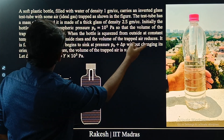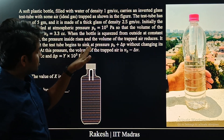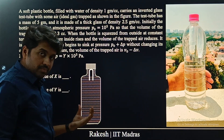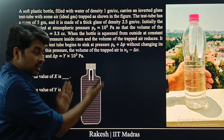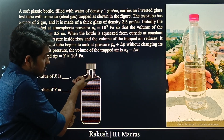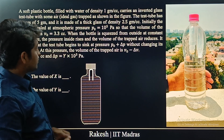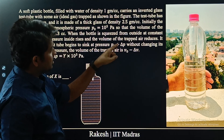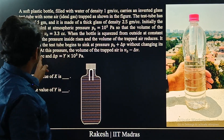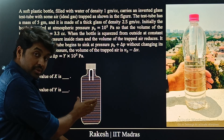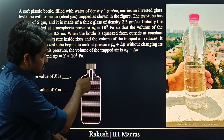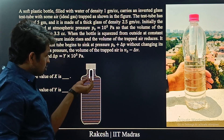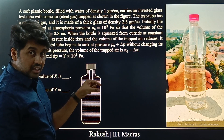When the bottle is squeezed from outside at constant temperature, the pressure inside rises and the volume of the trapped air reduces. Some water goes into the test tube and the air volume decreases. It is found that the test tube begins to sink at pressure P0 plus ΔP, without changing its orientation — meaning the test tube starts sinking straight down without tilting.